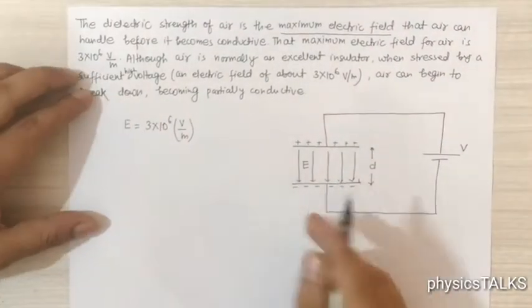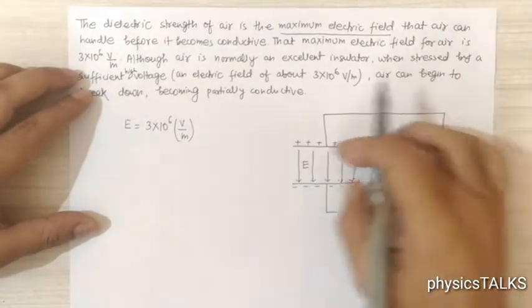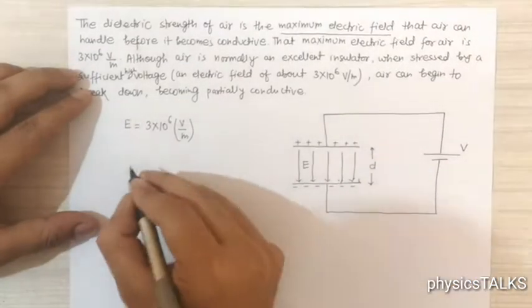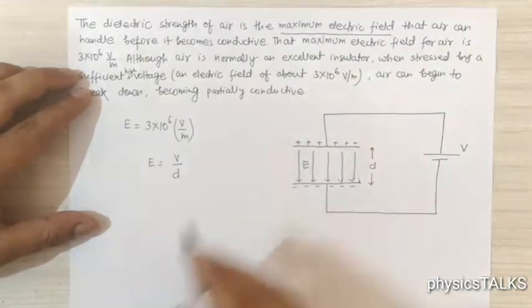In a capacitor case, we know that V, E, and d have a relationship. E is equal to V by d, where d here is the capacitor plate distance.